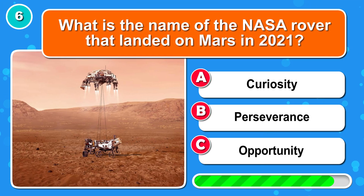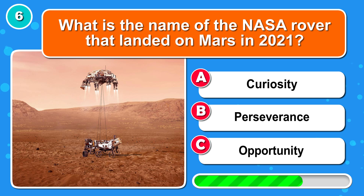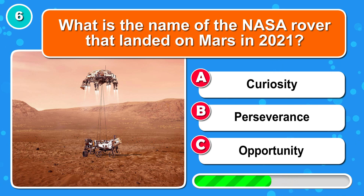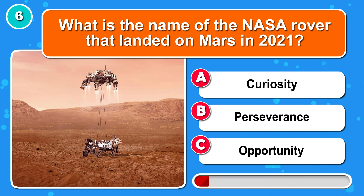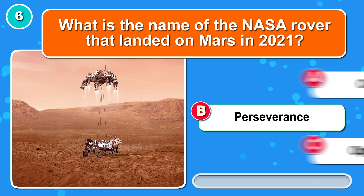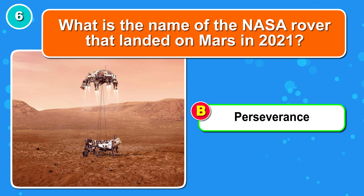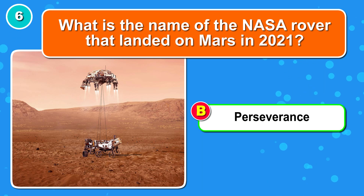What is the name of the NASA rover that landed on Mars in 2021? You got it, B: Perseverance.